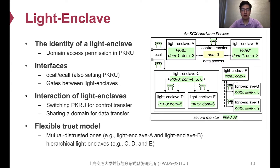Developers can use IDL to declare interfaces between the enclave and the outside application. Likewise, developers can use IDL to declare interfaces between light enclaves. The interaction between light enclaves requires switching PKRU for control flow transfer and can use a shared memory domain for data transfer. By default, light enclaves are mutually distrusted. Yet, hierarchical light enclaves are also allowed. For example, light enclave C is more privileged than both D and E and can directly access their private memory.